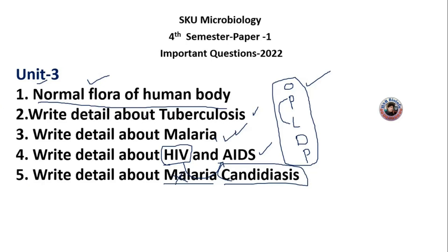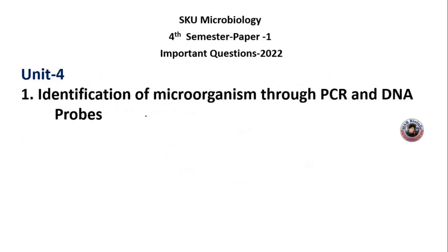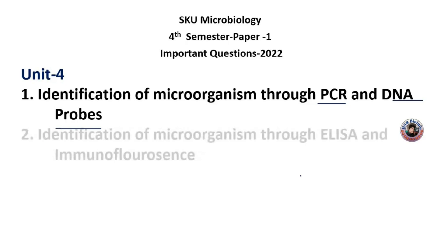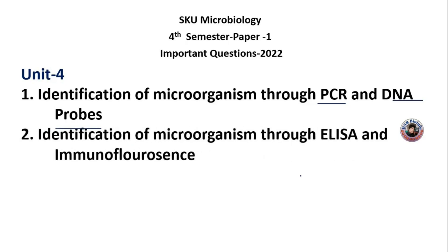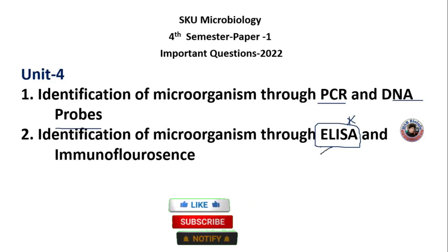Moving to unit 4. The first important question is identification of microorganisms through PCR — polymerase chain reaction — and DNA probes. We will also identify microorganisms through ELISA and immunofluorescence. If answering, explain what ELISA is and how these detection methods work.